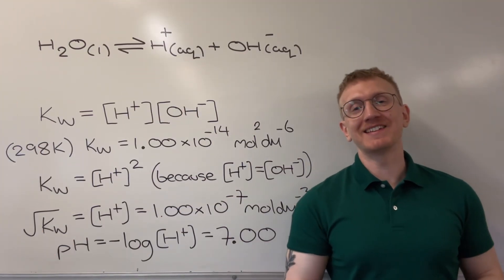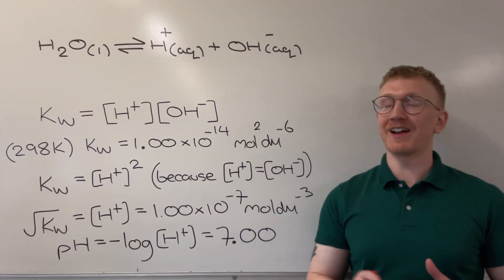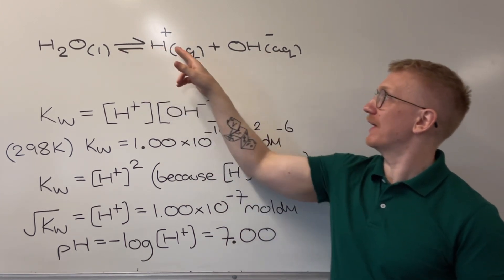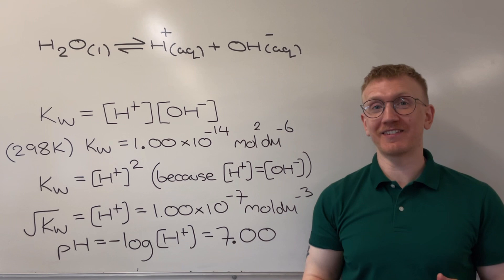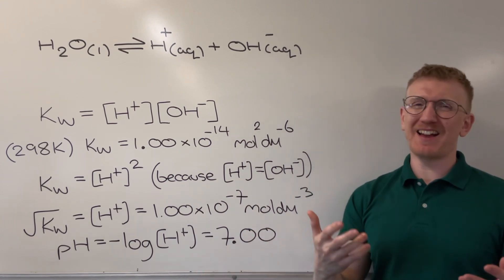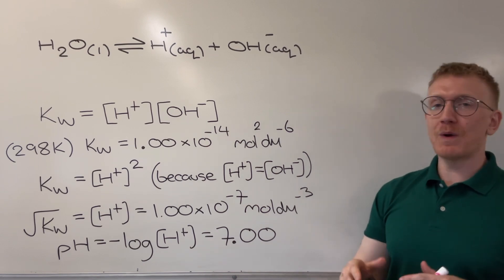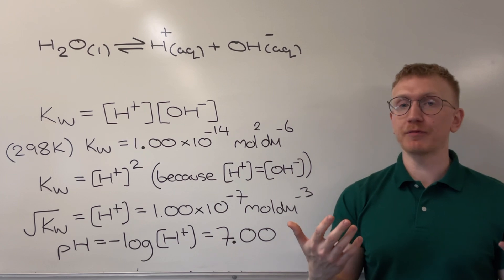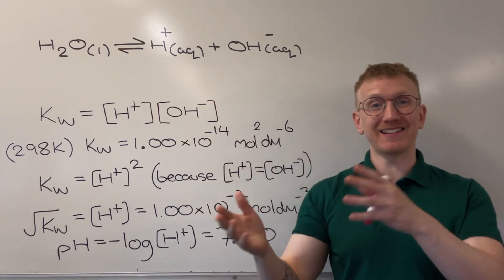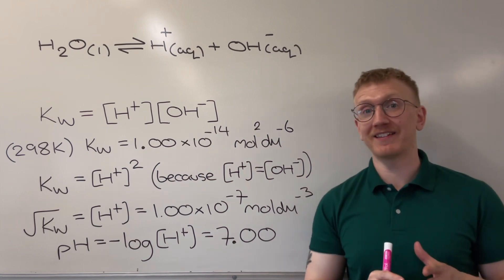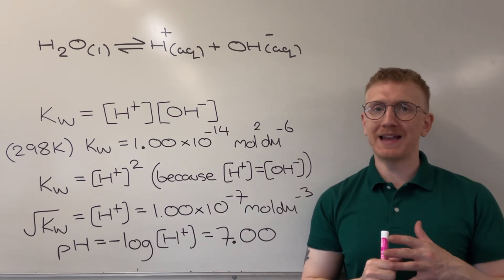KW is defined as the ionic product of water and it all starts with this dissociation of H2O into H plus and OH minus. Like all other equilibria, we can try and write a KC expression for this, but it kind of falls apart because when we think about heterogeneous equilibrium, where the state symbols are different, we should leave out anything that's liquid or solid. Here we can see that H2O is a liquid, so we would exclude it from the expression.